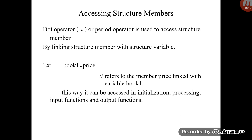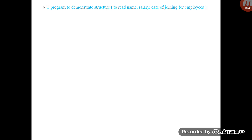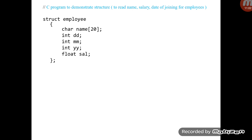You can use structure members like normal variables in assignments, calculations, and formatted input/output functions like printf and scanf. The rule is: always access them as `structure_variable.member_name`. Now let's look at a program that reads the name, salary, and date of joining for an employee and prints that data. The structure `employee` has five members: `name`, `dd`, `mm`, `yy`, and `salary`.